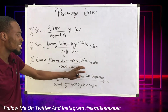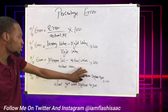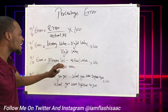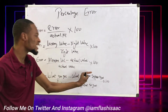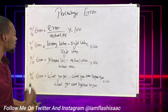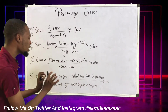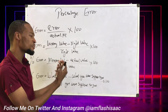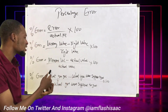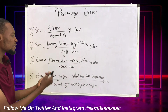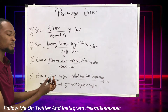Percentage error is the measured value — what you measured, what you got — minus the actual value you're supposed to get, over the actual value, times 100.